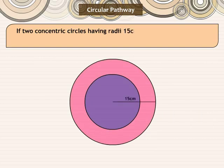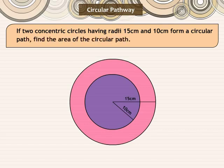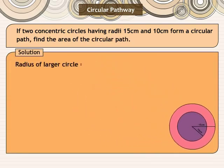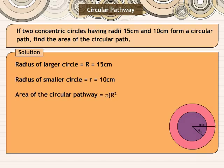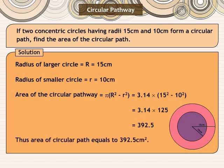Now let's see an example. If two concentric circles having radii 15 cm and 10 cm form a circular path, find the area of the circular path. Solution: Radius of large circle capital R equals 15 cm. Radius of smaller circle small r equals 10 cm. Applying the formula, area of the circular pathway is equal to pi into (capital R square minus small r square), gives 3.14 into (15 square minus 10 square), equals 3.14 into 125, equals 392.5. Thus, area of the circular path equals 392.5 cm square.